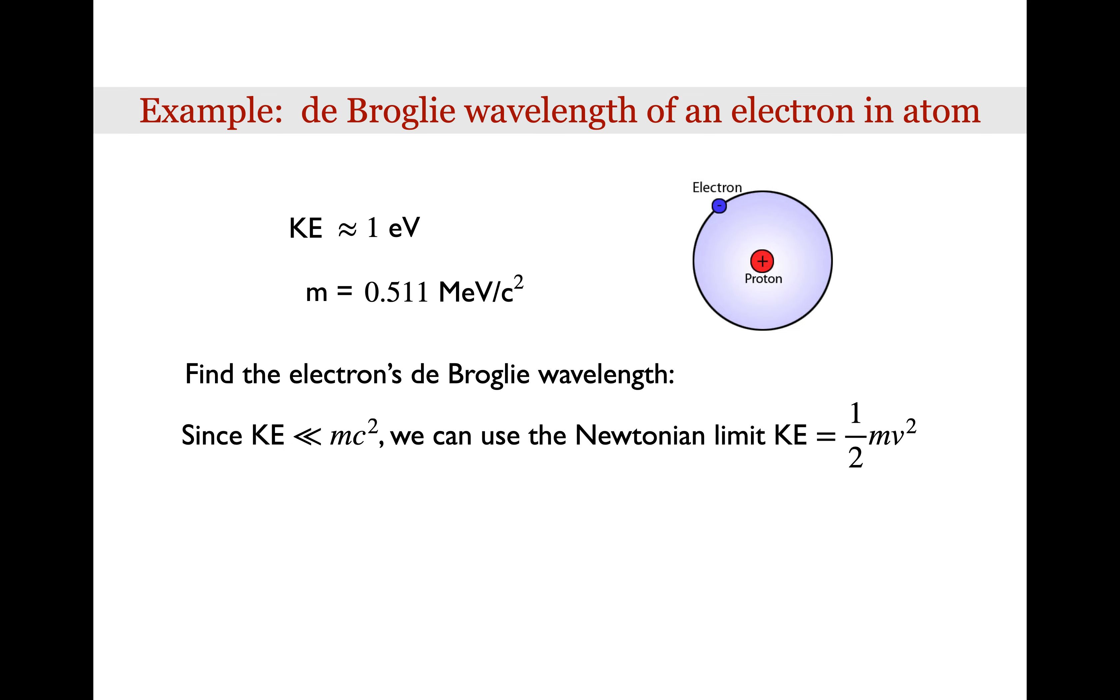Since the electron's kinetic energy is much less than its rest energy, we can safely use the Newtonian expression for kinetic energy of 1 half mv squared, or kinetic energy is the momentum squared over 2m. Multiplying top and bottom by c squared, we can now conveniently substitute in the values. So solving for pc, we find that it's equal to the square root of 2 times the rest energy times the kinetic energy, which is about 1 keV or 1,000 electron volts.